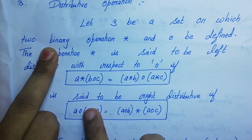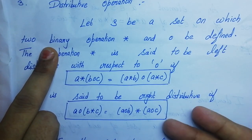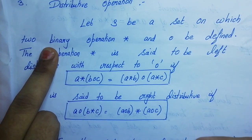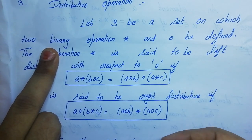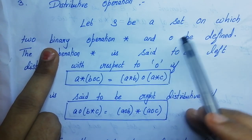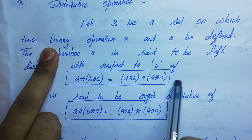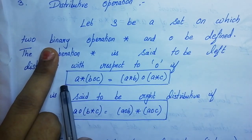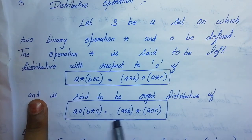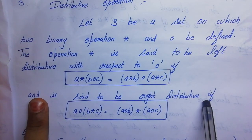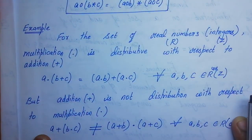The star and composition can be any two operators — plus, minus, division, multiplication, or any two operators. When the left distributive condition is satisfied, it is called left distributive. When the right distributive condition is satisfied, it is called right distributive.